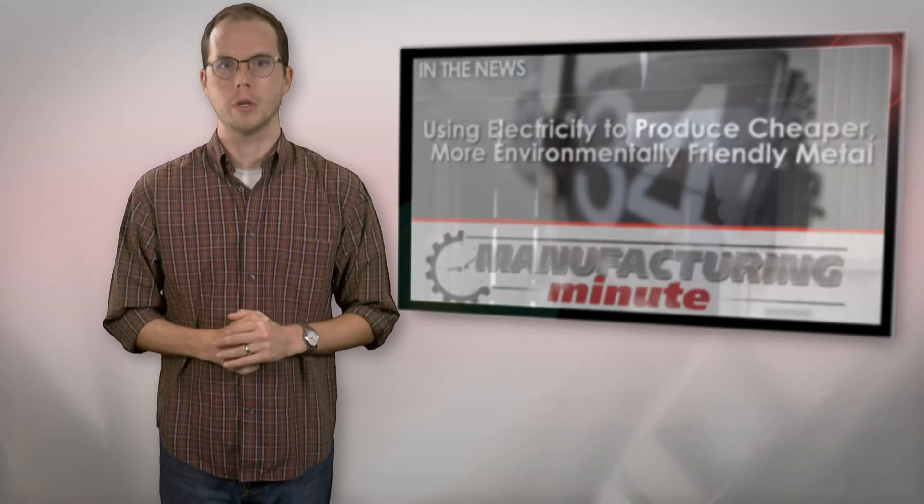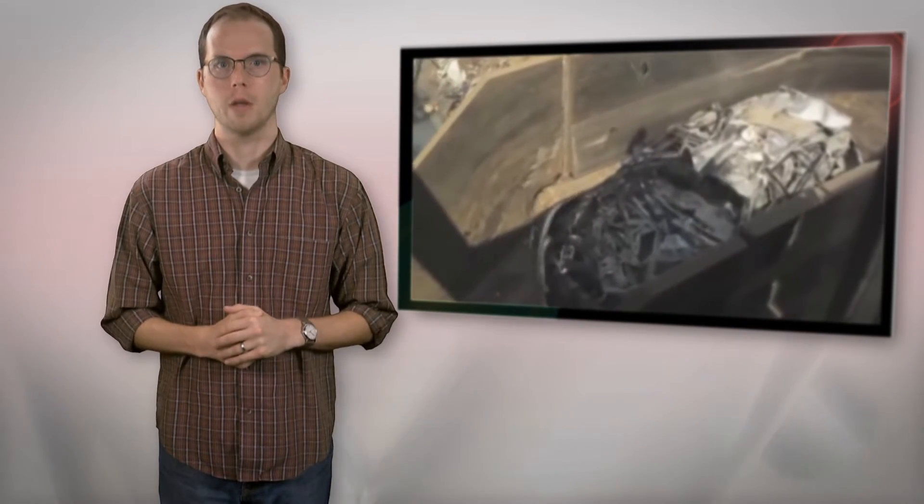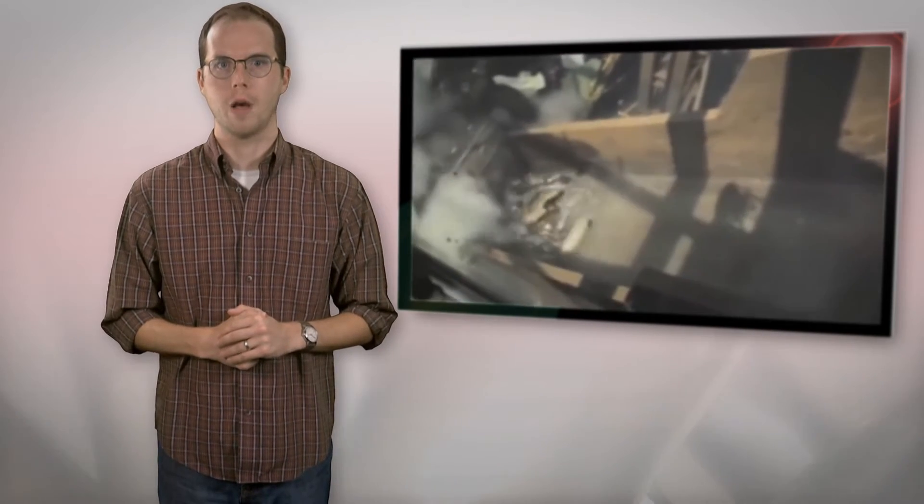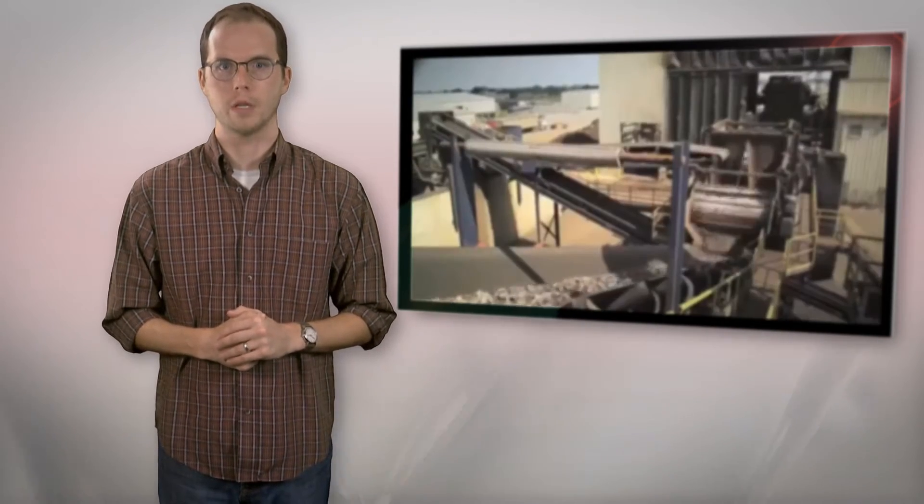MIT chemists originally hoped to develop a new type of liquid battery, but when they applied an electric charge to the materials in their experiment, they instead produced antimony, a little-used metal often deployed in semiconductors, batteries, and fire retardants.